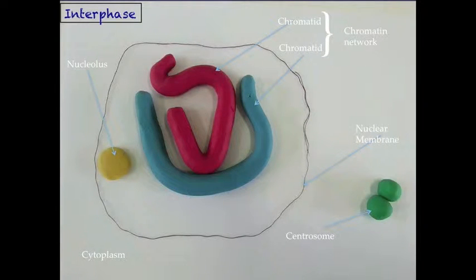The first stage of mitosis is known as interphase, which accounts for about 90% of the cell cycle. During interphase, chromatids exist in a chromatin network within the nucleus. This nucleus is bound by a nuclear membrane and contains a nucleolus. Outside the nucleus, a centrosome exists in the cytoplasm.